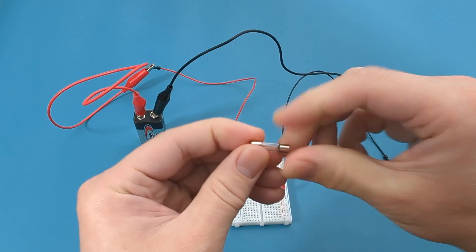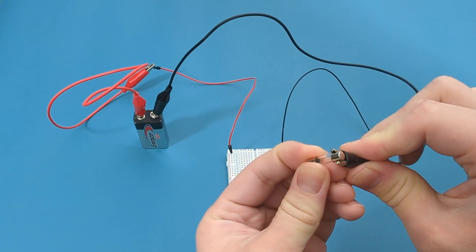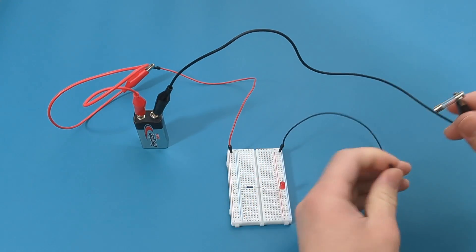Connect the opposite end of the black alligator clip to one end of the fuse. Touch the other end of the black alligator wire to the other end of the fuse.